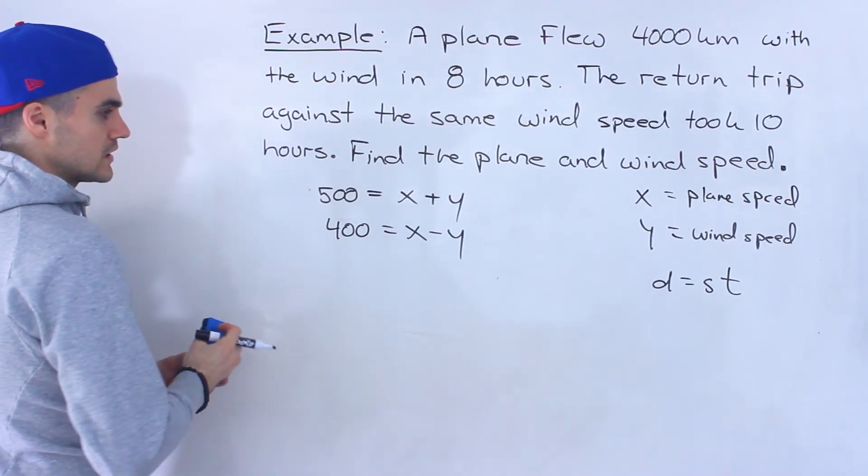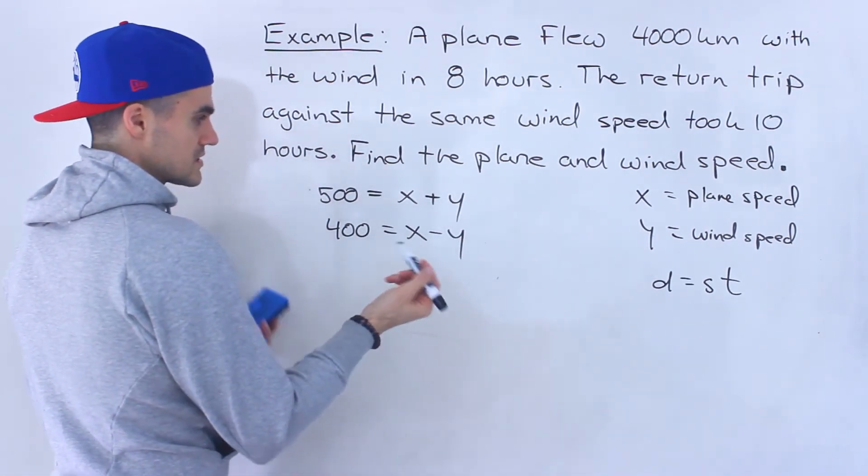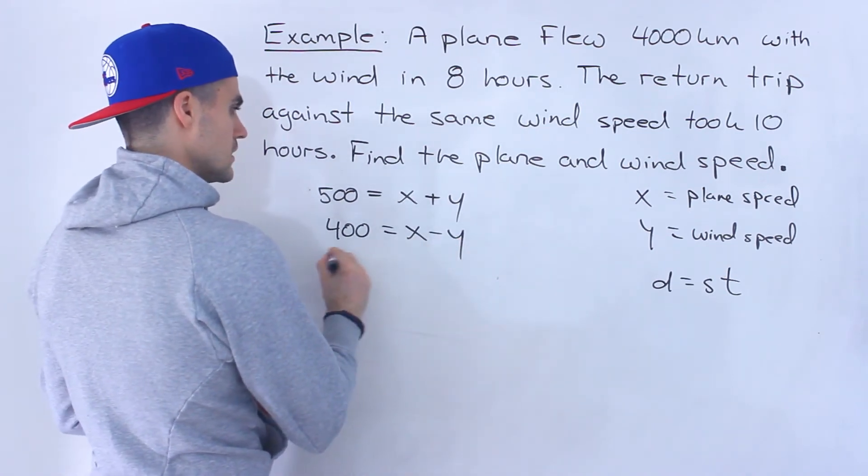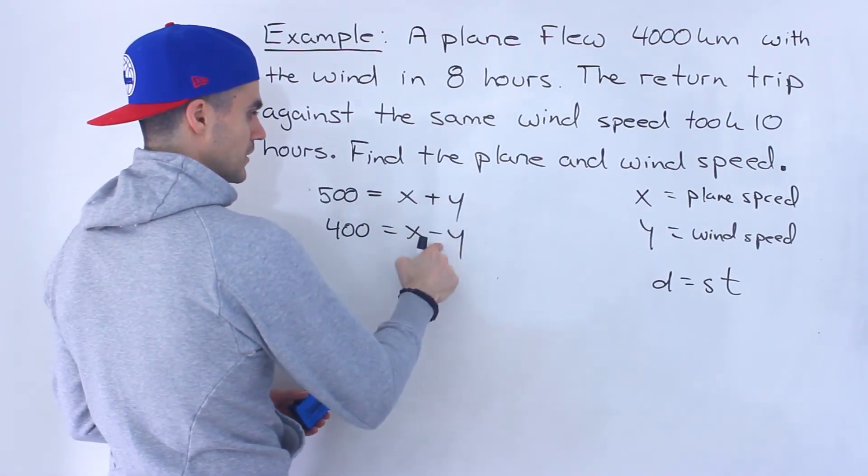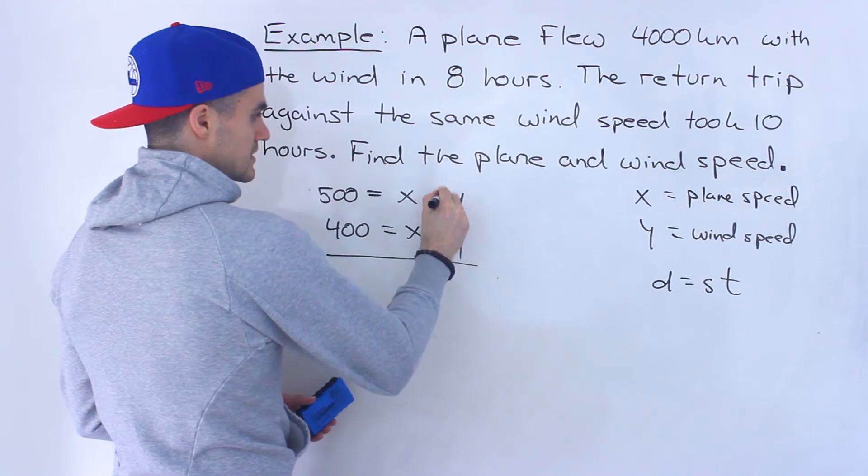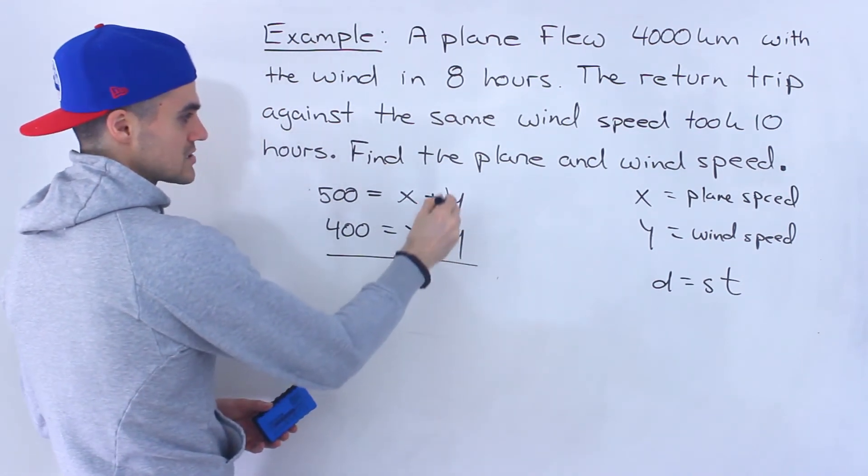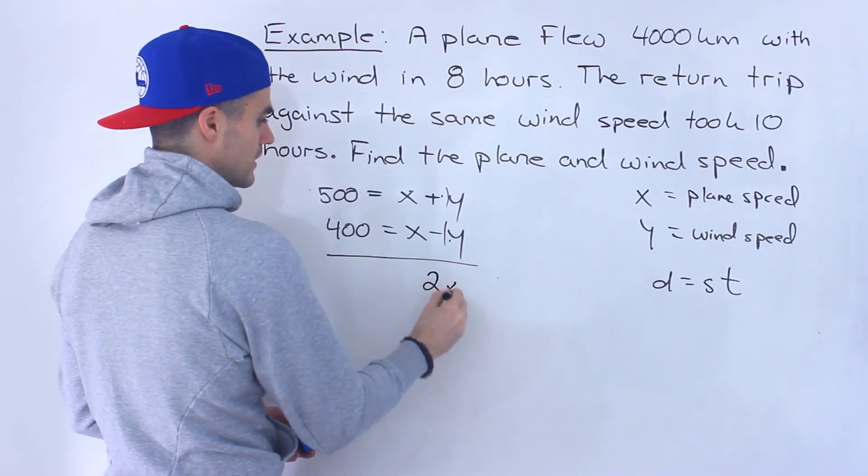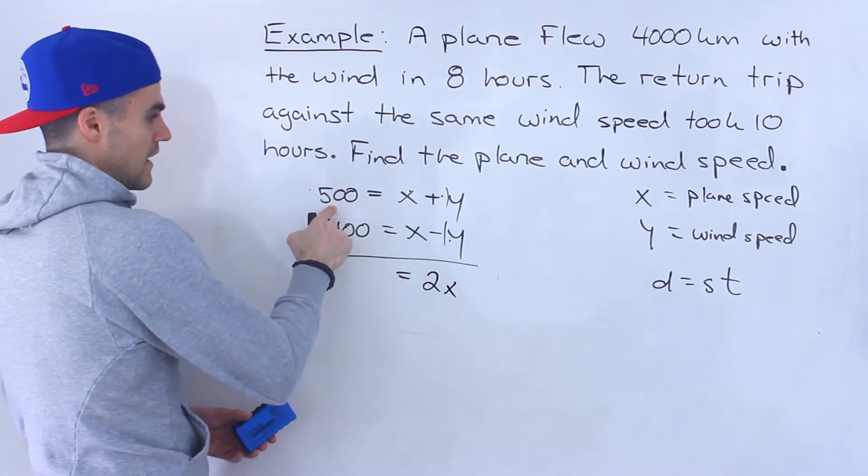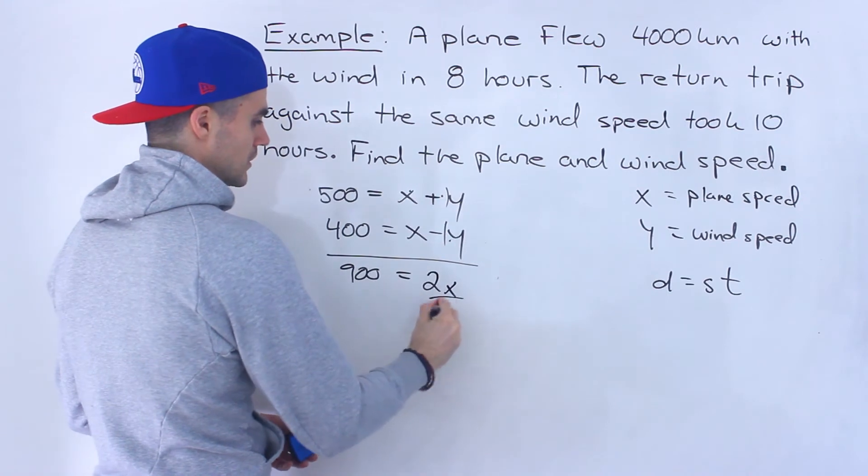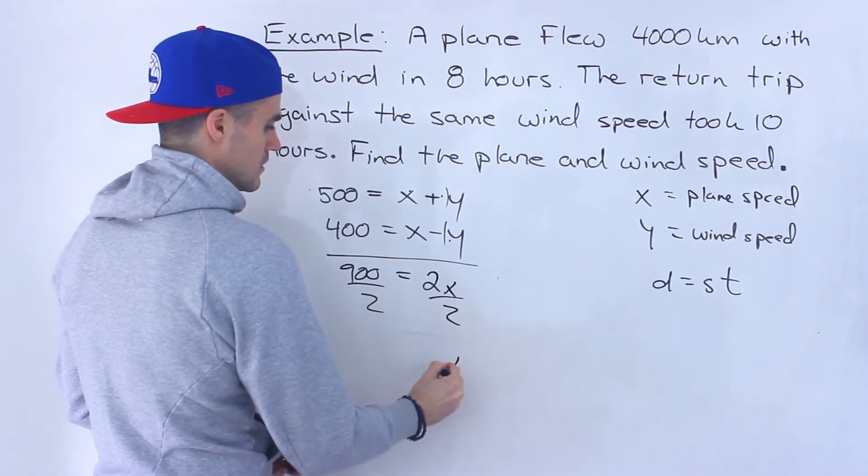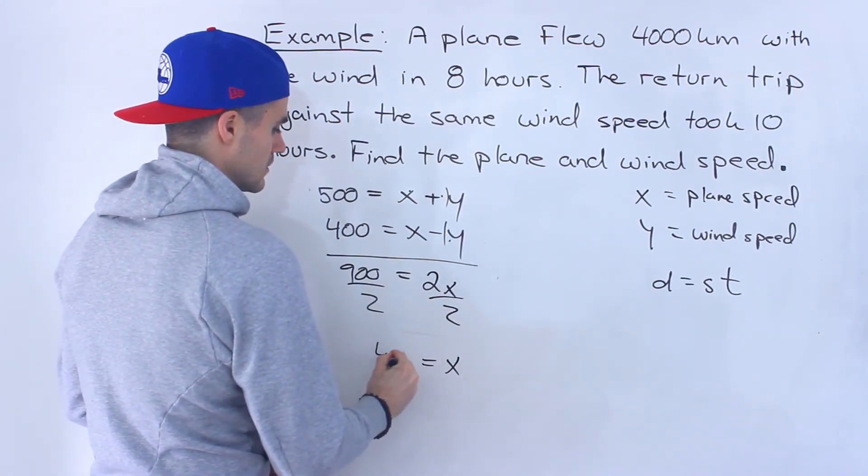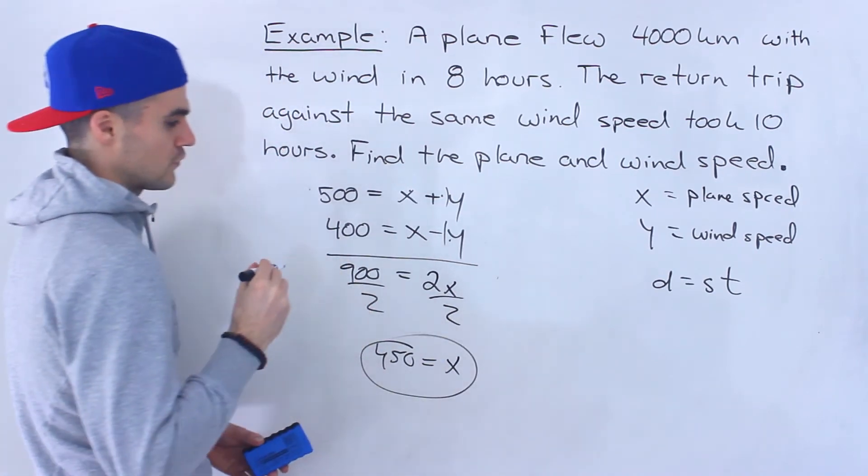And then from here really easy. We can just do, let's do substitution. Actually you know what? Because we have a plus minus Y here. Got the same coefficient one in front. Let's just add these. So plus Y minus Y, that would give us 0. X plus X gives us 2X. And then 500 plus 400 gives us 900. Then we can divide by 2. X would be 450.